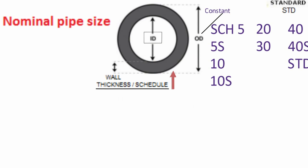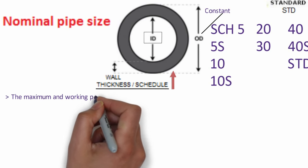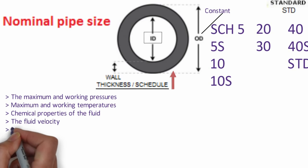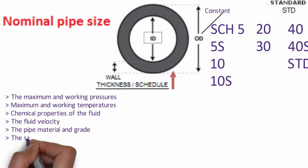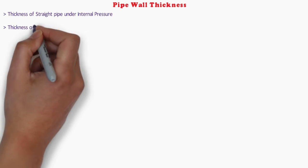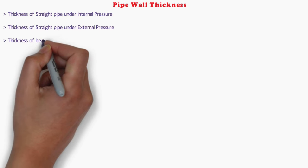Once the inside diameter of the pipe segment has been determined, the pipe wall thickness must be calculated. There are many factors that affect pipe wall thickness requirements, including maximum and working pressures, temperatures, chemical properties of the fluid, fluid velocity, pipe material and grade, and safety factor. For the calculation part, there are three conditions: thickness of straight pipe under internal pressure, thickness of straight pipe under external pressure, and thickness of bend.